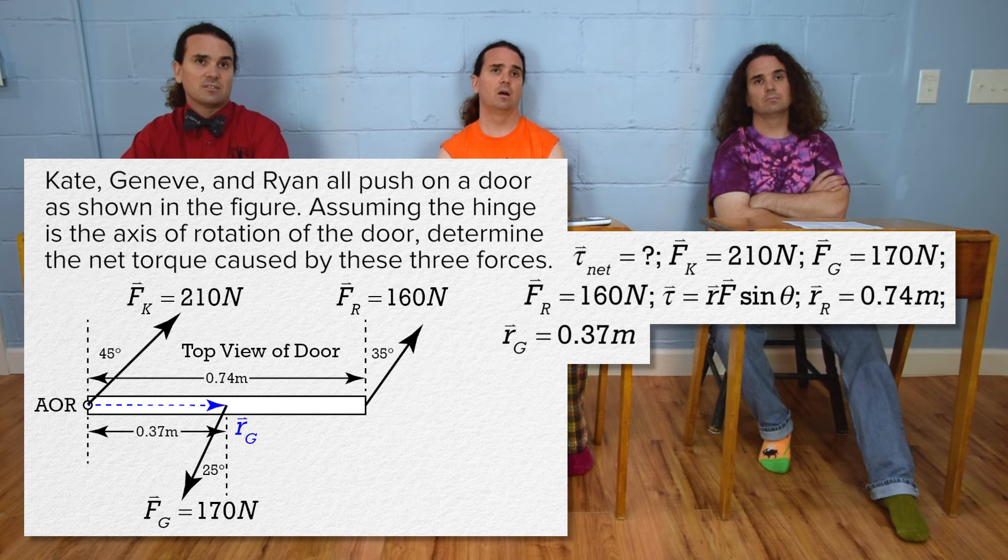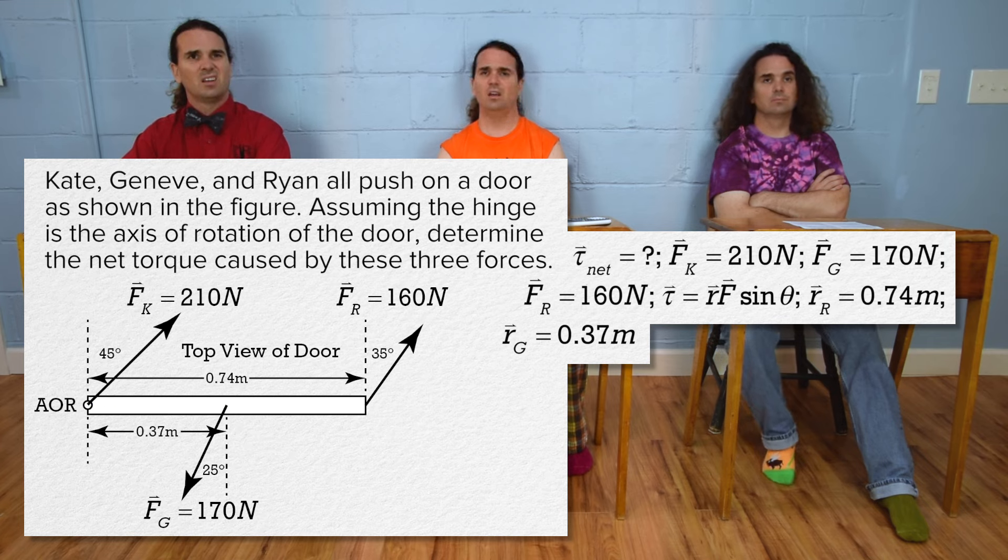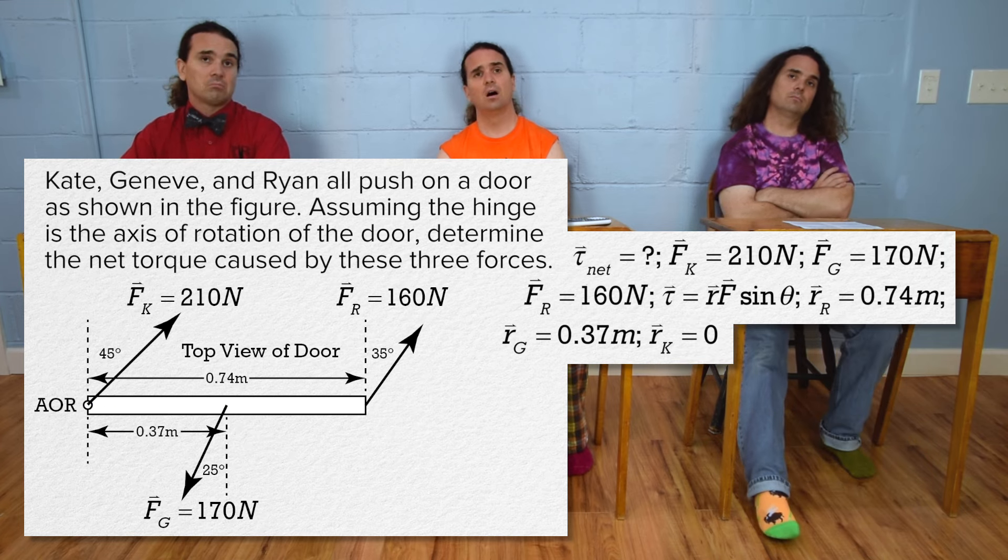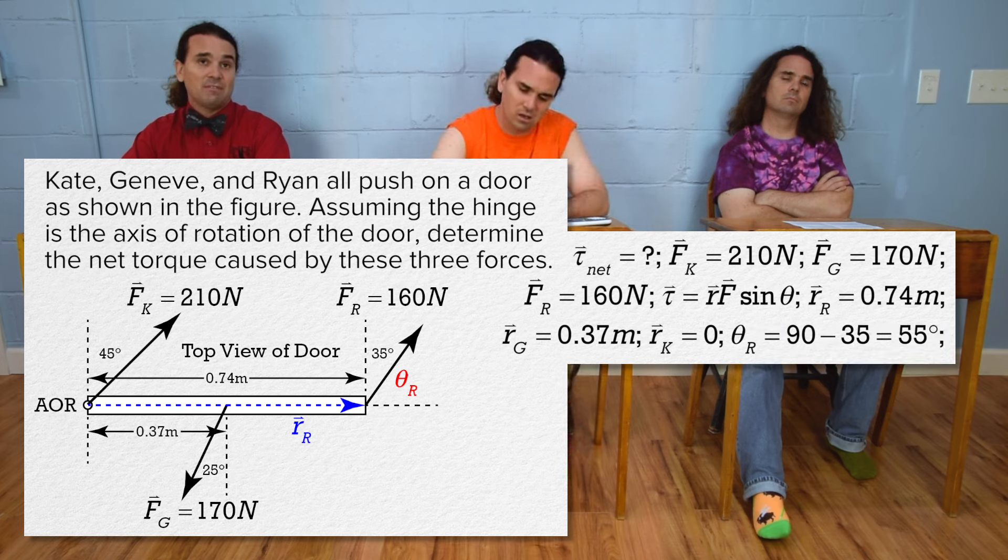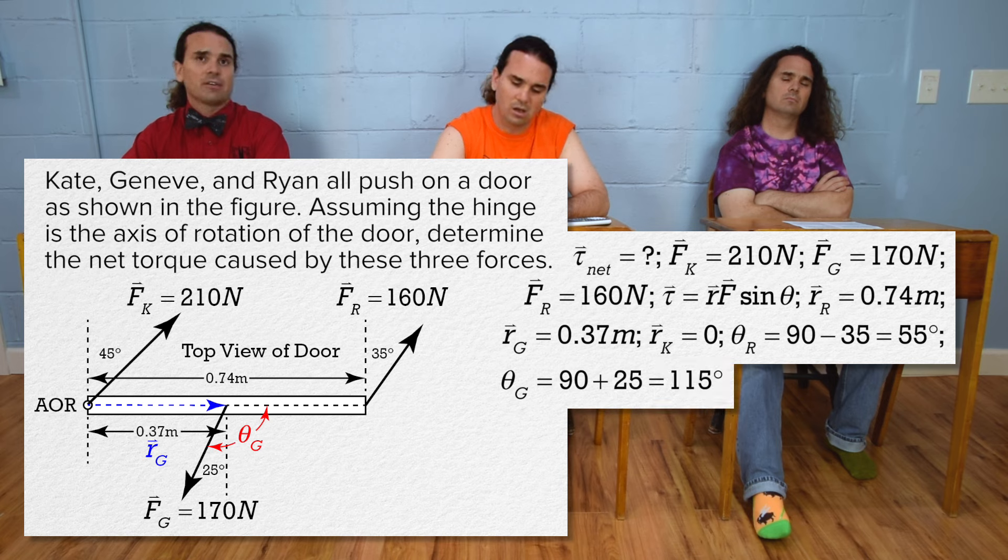R for Kate is zero? Yeah, it has to be zero. Theta for Ryan is 90 minus 35 or 55 degrees, theta for Geneve is 90 plus 25 or 115 degrees.